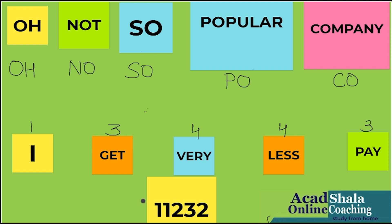Now what should be my next step? I will take the letter count for each word and write it as a subscript. The first word had one letter — I will write it on top, but writing OH or OH₁ makes no difference, so I will remove it. Next is three, so I will write NO₃. Next is four — SO₄. Next is four — PO₄. Last is three — CO₃.